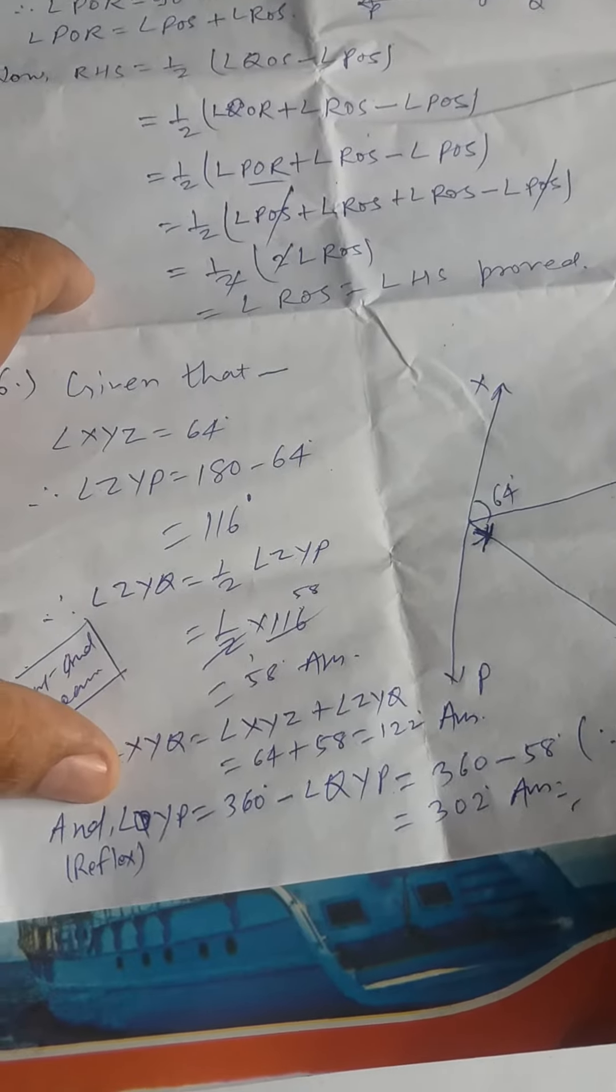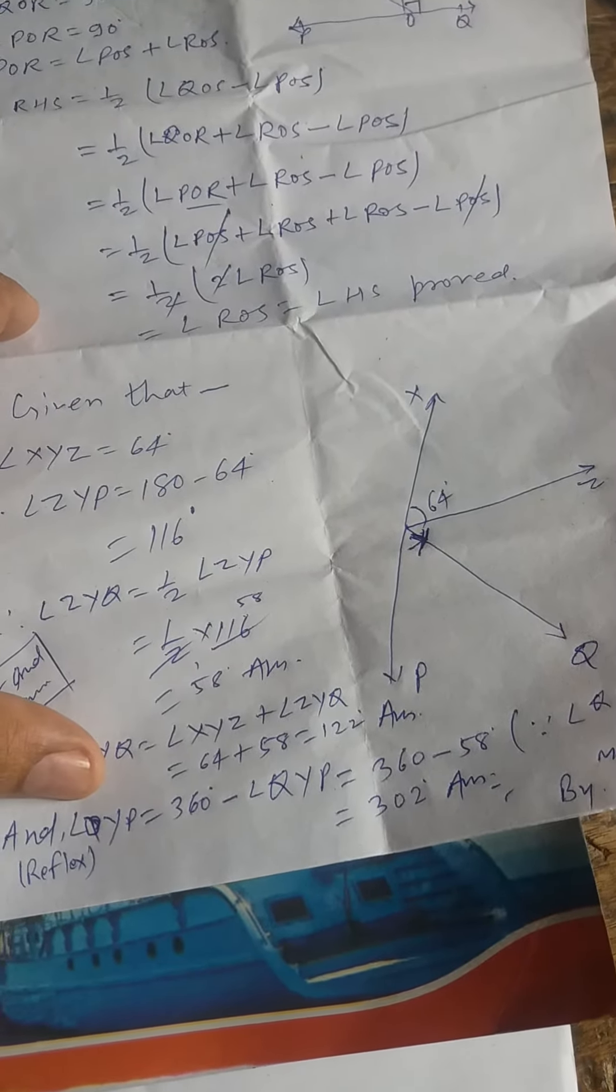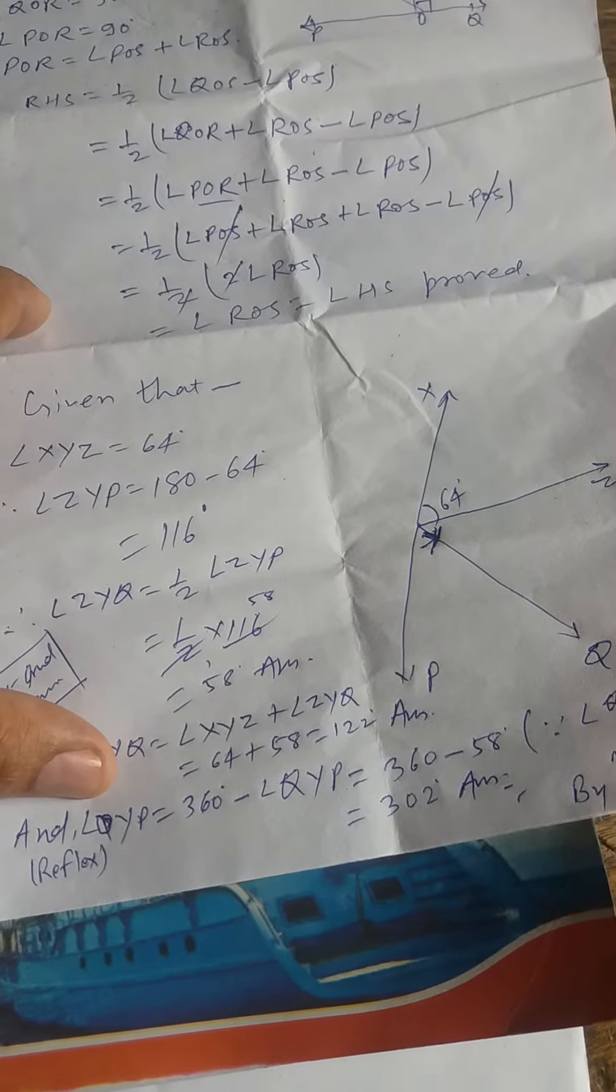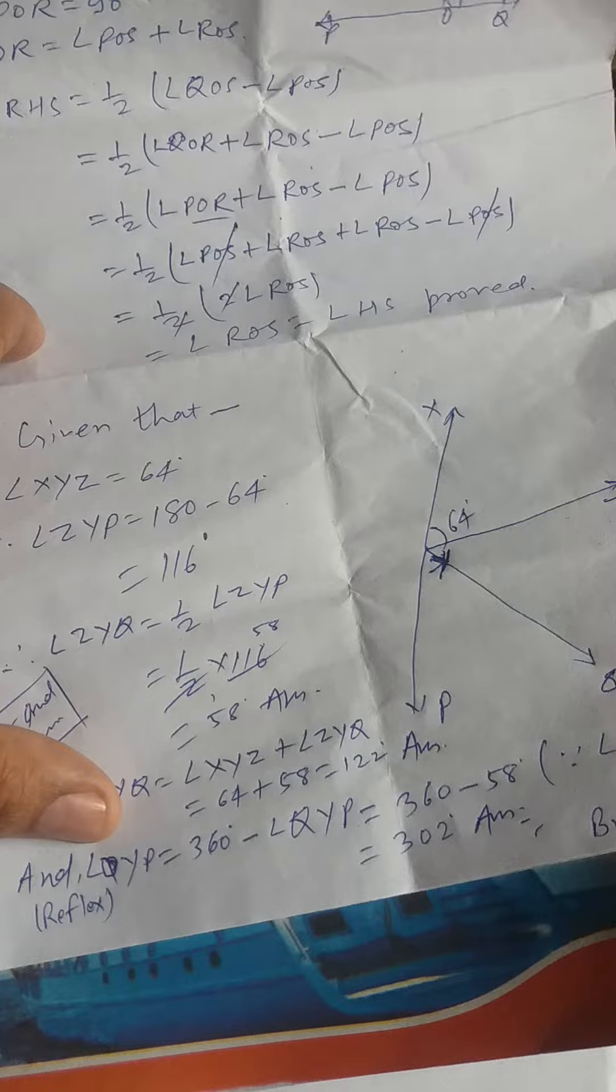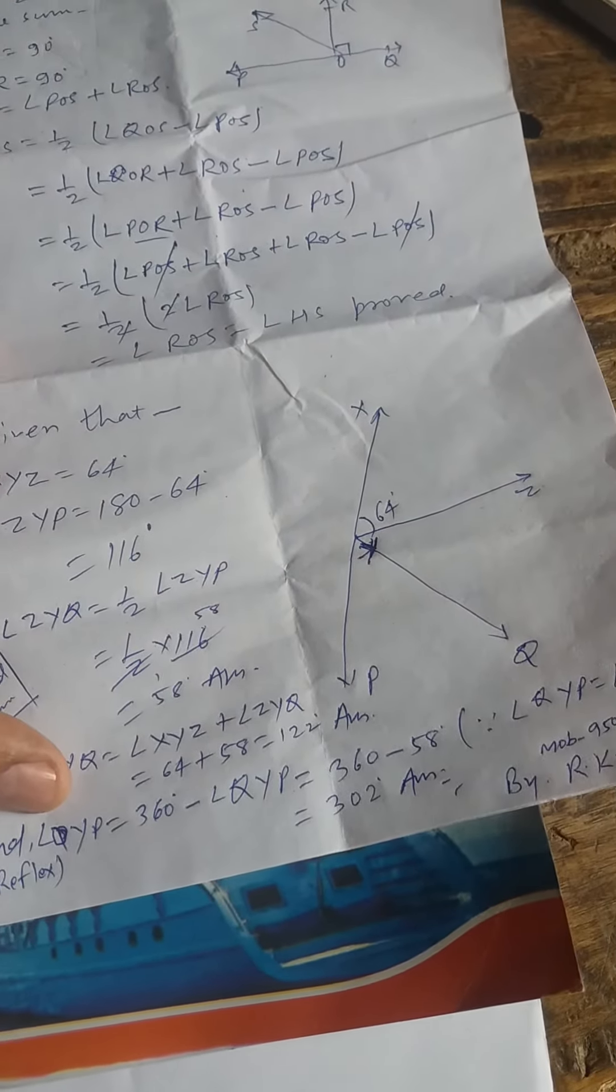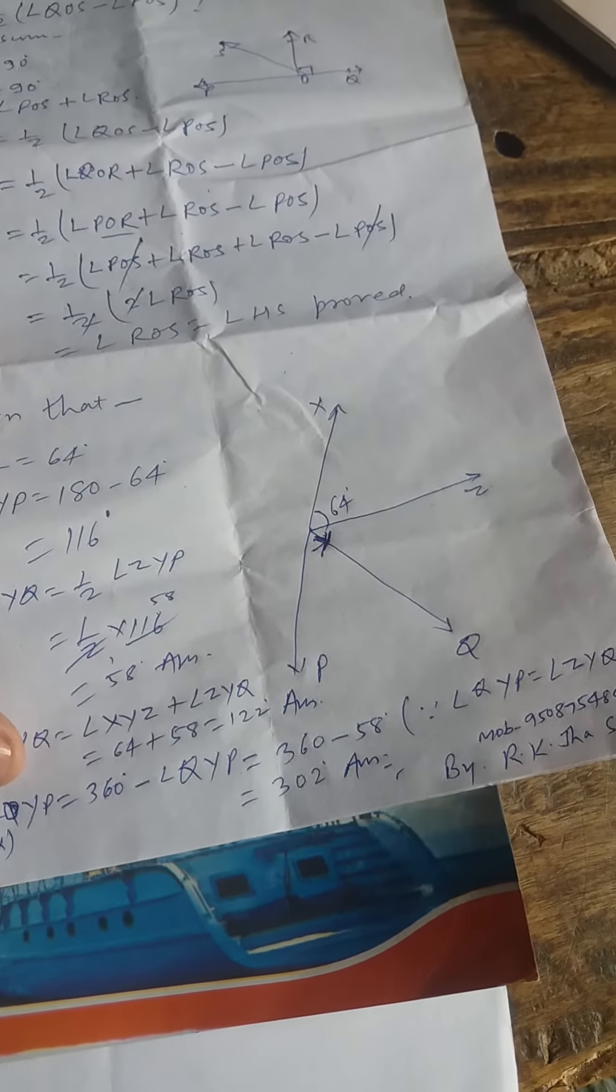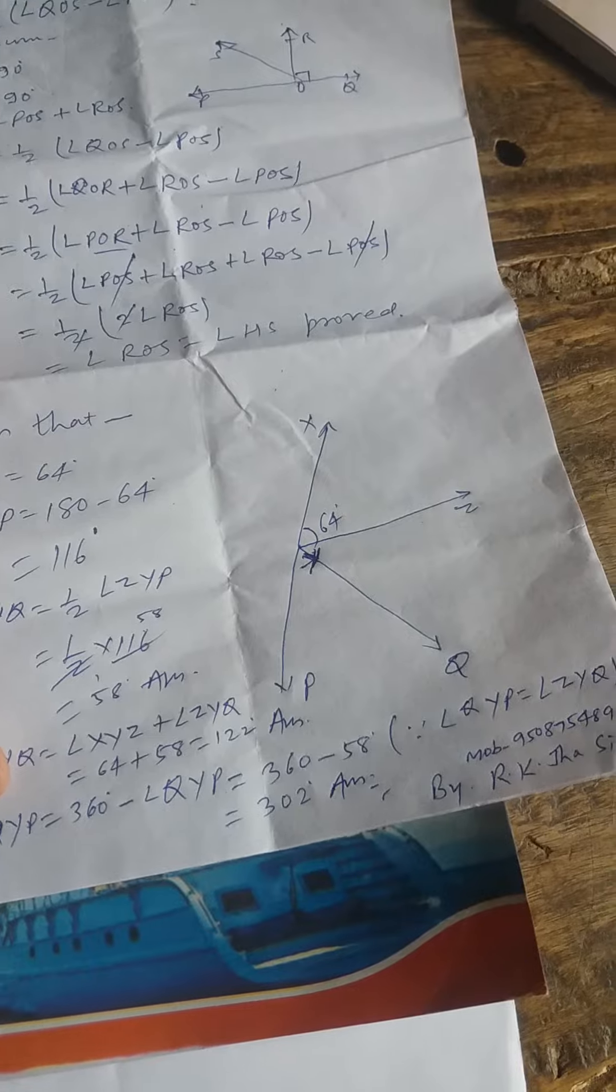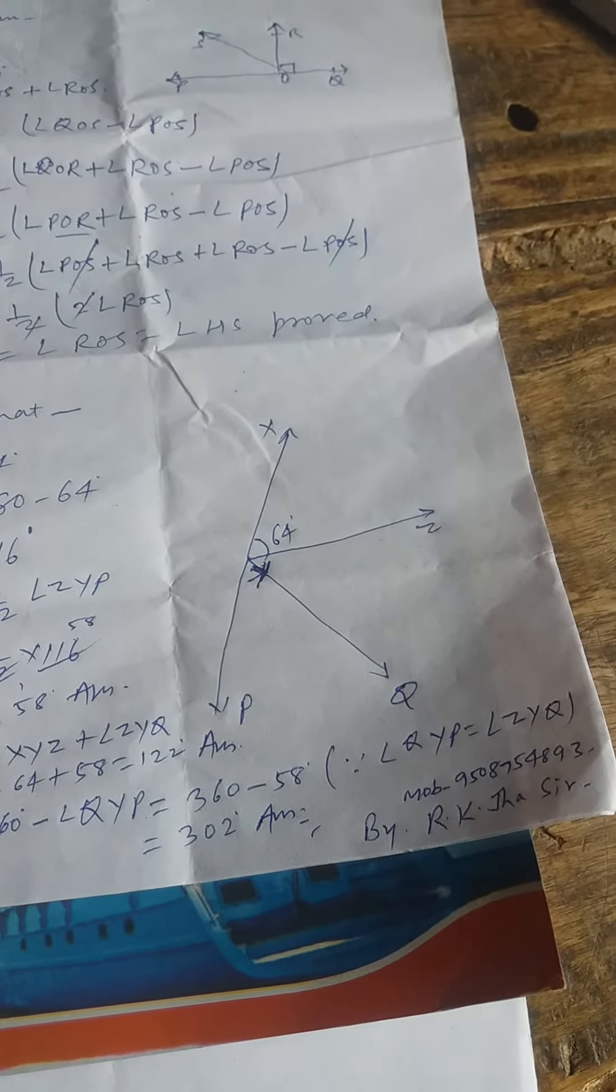Also, angle QYE equals 360 minus angle QYB, which equals 360 minus 328 degrees, which equals 32 degrees, because angle QYB equals angle ZYQ.